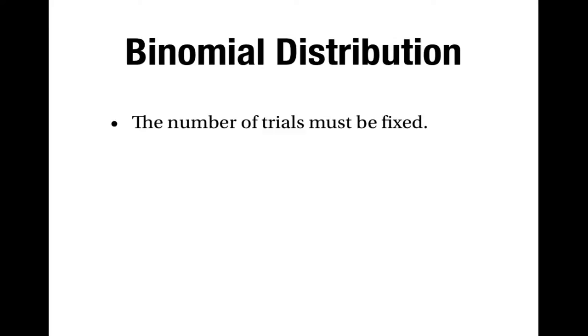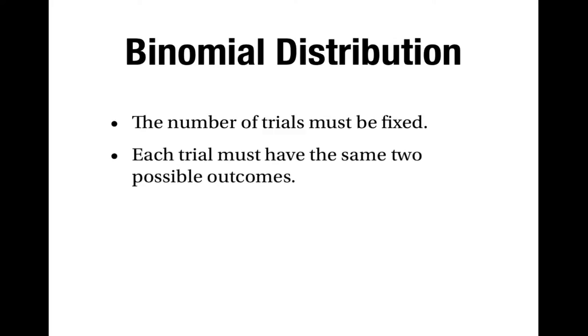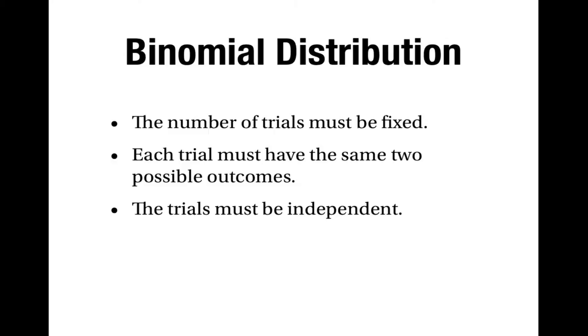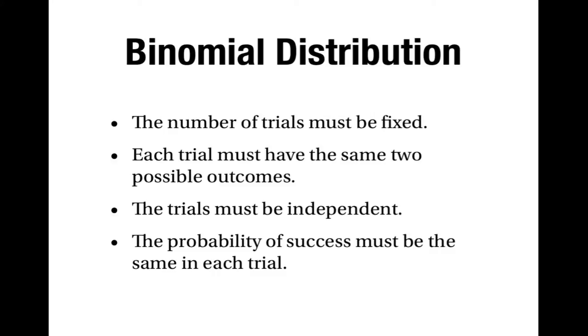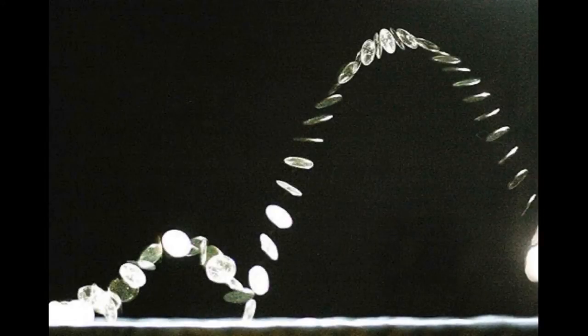The first criterion says that the number of trials must be fixed. The second one says that each trial must have the same two possible outcomes — a definite success or a definite failure. Thirdly, the trials must be independent, so the outcome of one trial doesn't affect the probability of success in the next trial, and more generally the probability of success must be the same in every single trial.